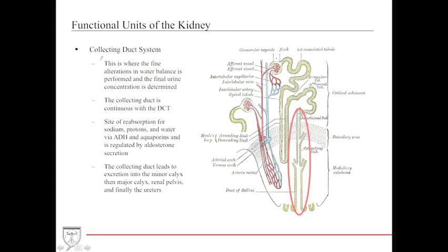The collecting duct system is the terminal segment where the final alterations in water balance occur and the final concentration of urine is determined. If you're very thirsty, this segment makes your urine concentrated. If you're overhydrated, the collecting duct fails to reabsorb water because it doesn't need to. It absorbs sodium, protons, and water via ADH (also called vasopressin) and aquaporins, regulated by aldosterone. The collecting duct system is continuous with the DCT as well as the minor calyces, which drain to the major calyces, the renal pelvis, and finally the ureters to the bladder.